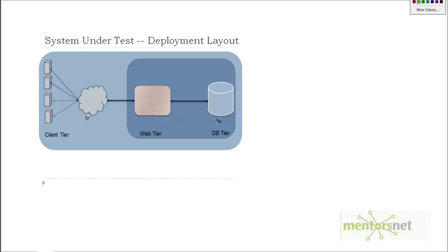There are two options: one is to go and buy hardware, network, and storage from companies like IBM, Dell, or HP. The second option is to rent this hardware from a service called Amazon Web Services.